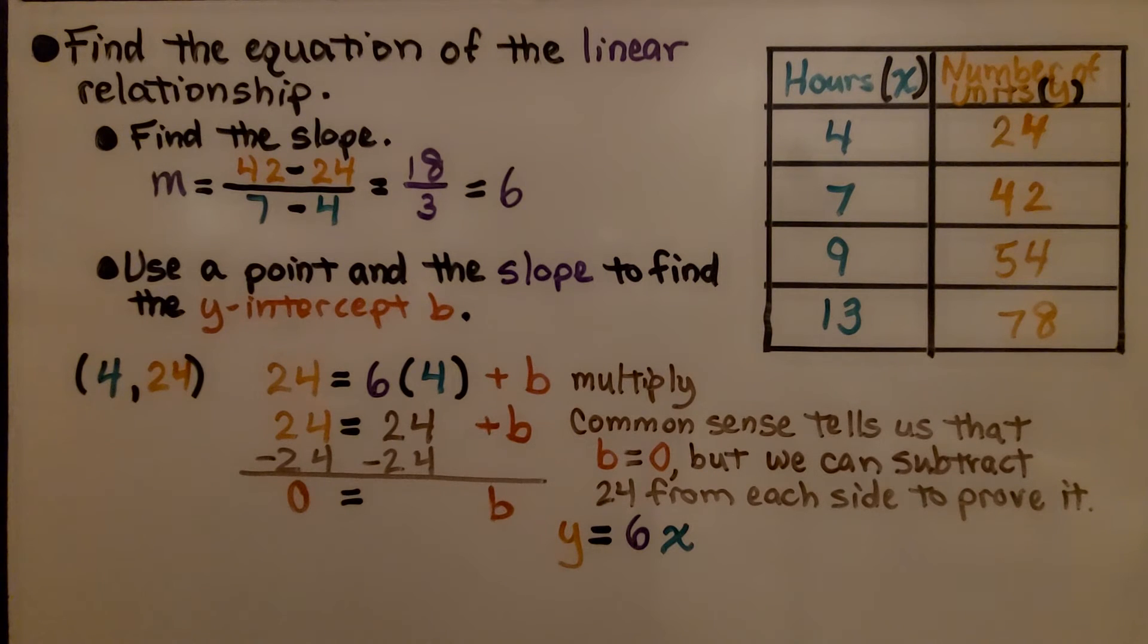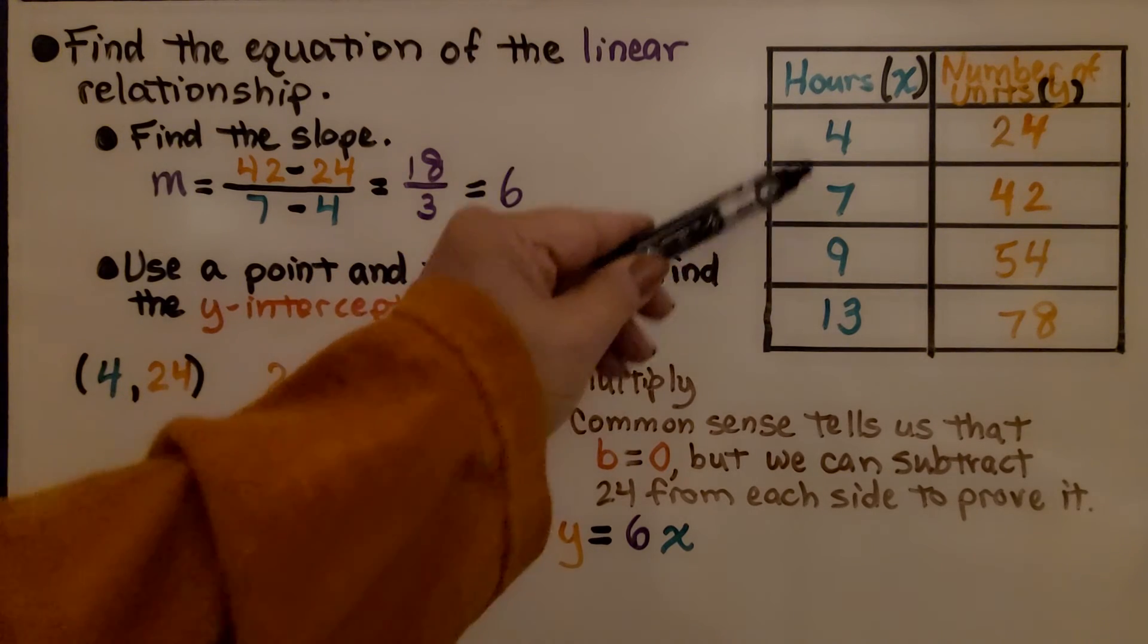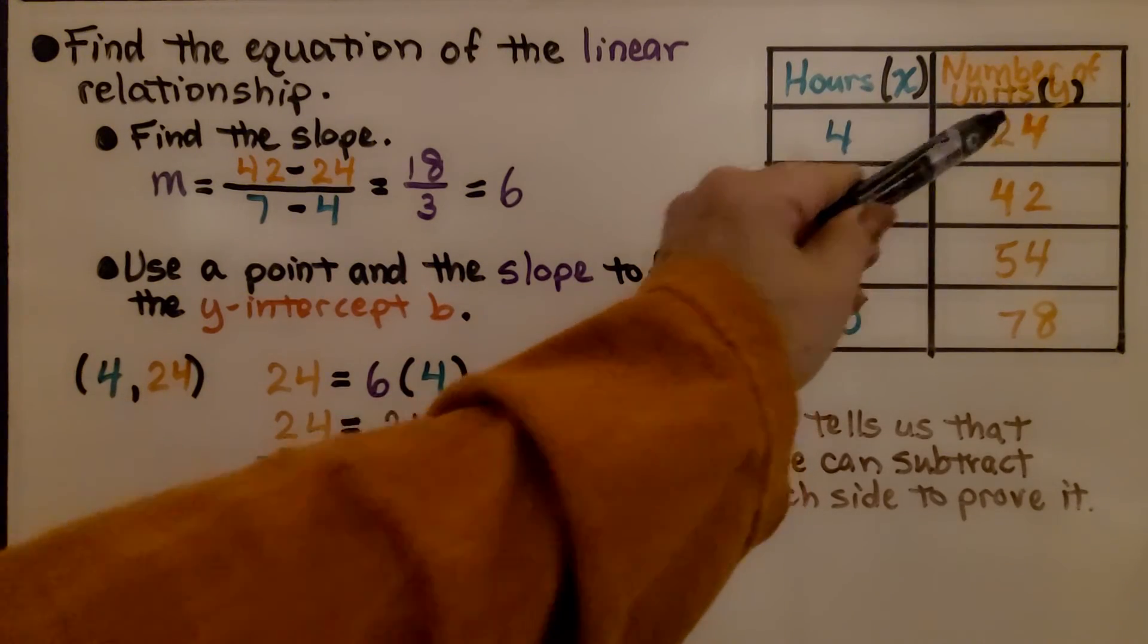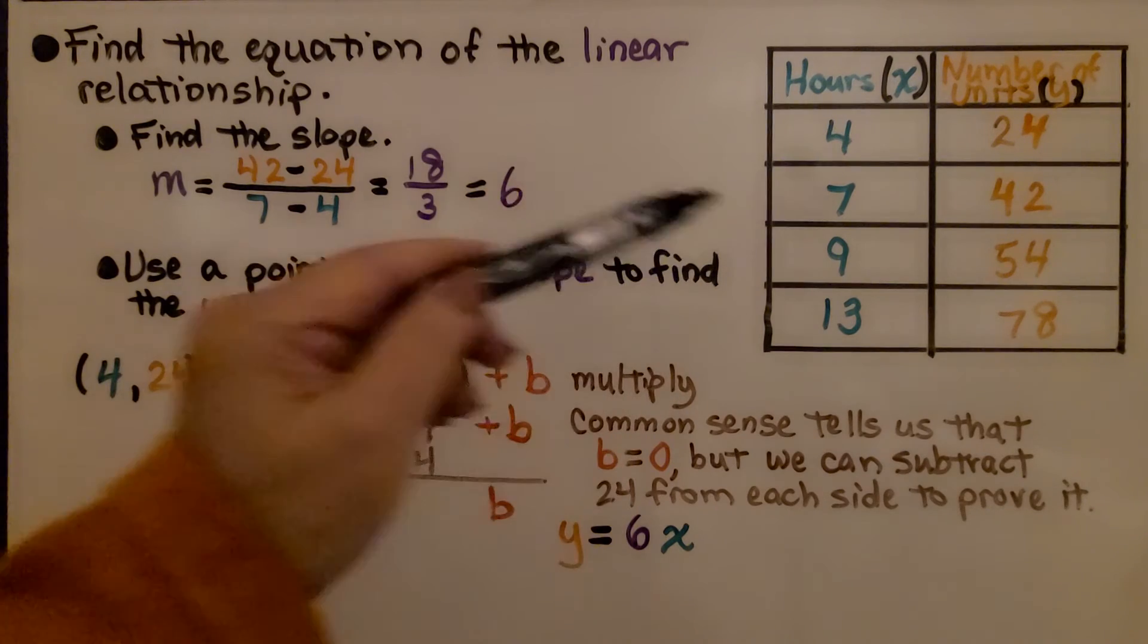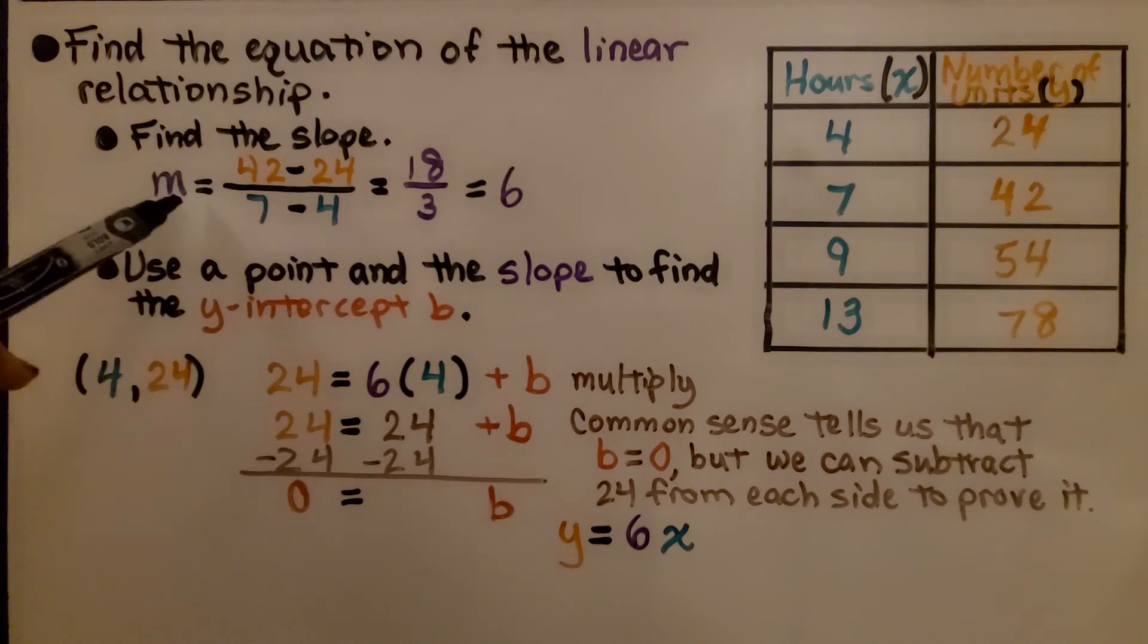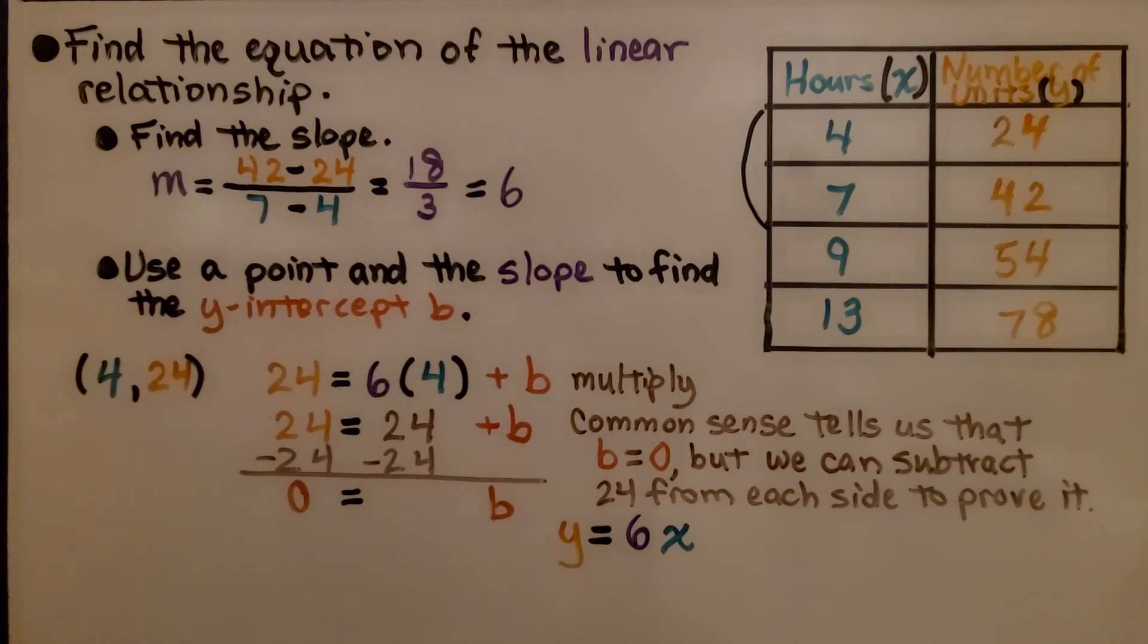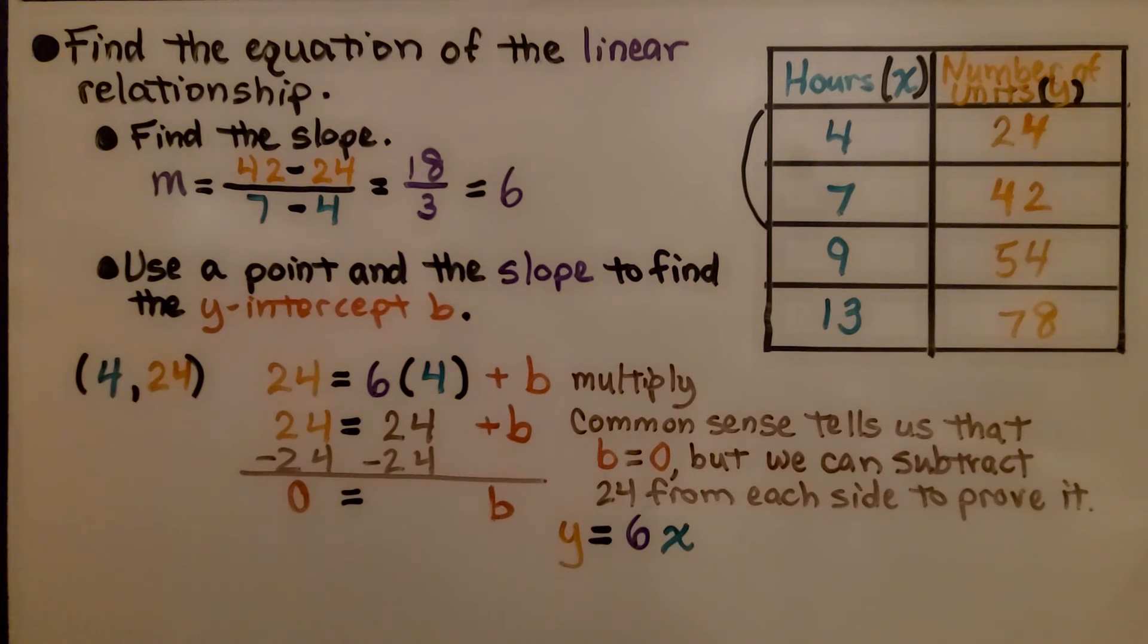Again, we need to find the equation of the linear relationship. So first thing we do is take a look at this table. It's showing hours for x and the number of units for y. We don't know what the units are, but it doesn't matter. We need to find the slope. We're going to use the slope formula, and we're going to choose two of these as ordered pairs. We have 4 for x, 24 for y, and 7 for x, and 42 for y.